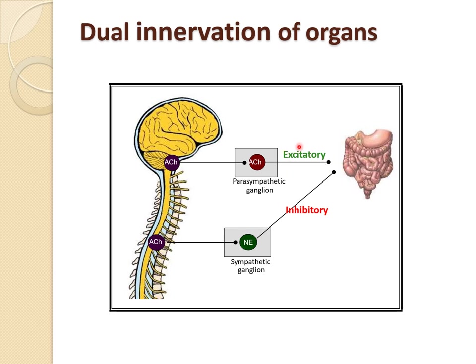Parasympathetic stimulation increases the activity of the enteric nervous system, thus enhancing all gastrointestinal functions. It causes excitation of all musculature of the gut except the sphincters, which it inhibits. There is an increase in GI motility and secretory activity. Sympathetic stimulation causes vasoconstriction, excitation of the sphincters and smooth muscles of the muscularis mucosa throughout the GI tract, and inhibition of gut motility.